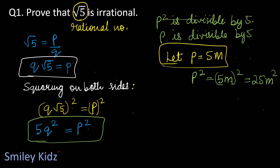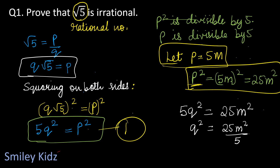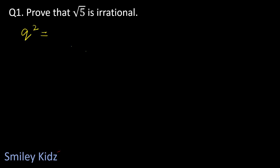We found p² in order to substitute into equation 1, which is 5q² equals p². Substituting gives 5q² equals 25m², and dividing both sides by 5 gives q² equals 5m². Therefore q² is divisible by 5, and so q is also divisible by 5.